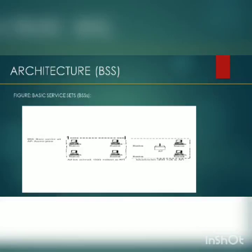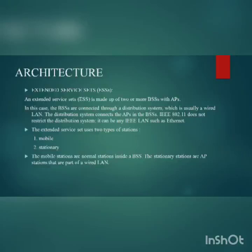A BSS with an AP is sometimes referred to as an infrastructure network. An extended service set is made up of two or more BSS with APs. In this case, the BSS are connected through a distribution system, which is usually a wired LAN.